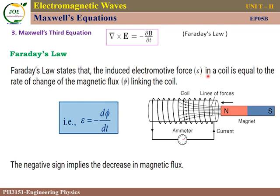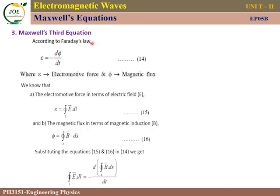The induced electromotive force ε equals minus the rate of change of magnetic flux: ε = -∂Φ/∂t. This is the actual Faraday's law and is the third equation, equation number 14. Here ε is the electromotive force and Φ is the magnetic flux.